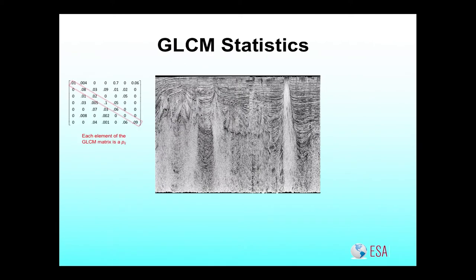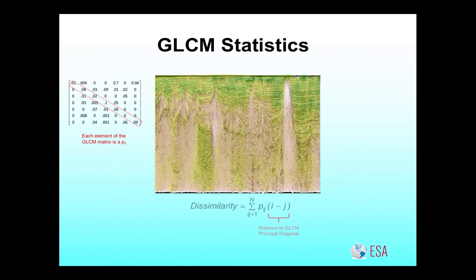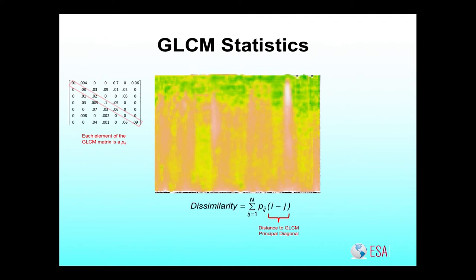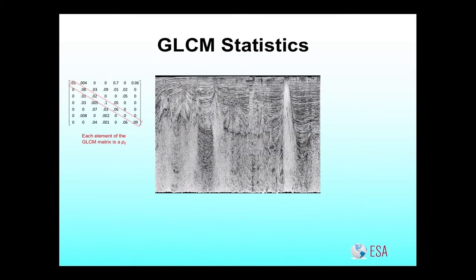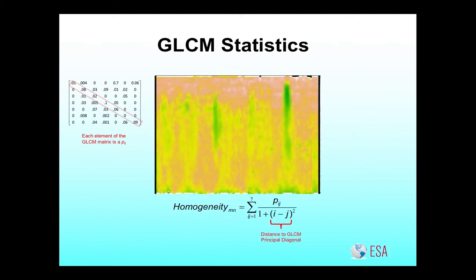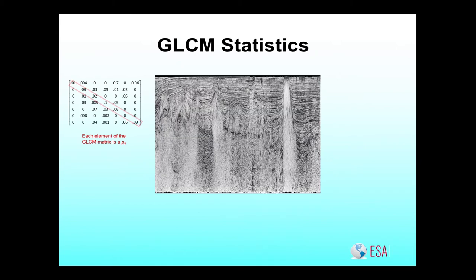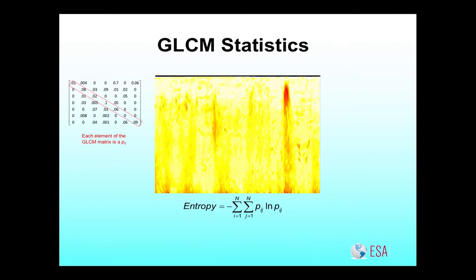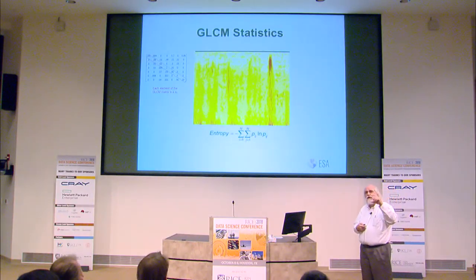Here are the kinds of GLCM statistics we're going to compute. Most of them relate to where cells in the matrix are with respect to the principal diagonal — the line where the exact same levels are coincident with each other. We have dissimilarity, which linearly weights the distance to the principal diagonal. We have contrast, where that distance is squared, so being further away counts more. We have the inverse of that, which is homogeneity. And we also have entropy — you can't do statistics without entropy. You can see how those salt domes are reflected in the reduction of those neighborhood textures to these statistics.